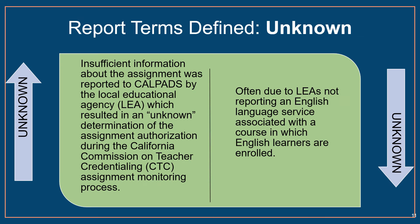An assignment monitoring outcome of UNKNOWN indicates that insufficient information about the assignment was reported to CALPADS by the local educational agency, or LEA, which resulted in an unknown determination of the assignment authorization during the CTC assignment monitoring process. This outcome is often the result of LEAs not reporting an English language service associated with a course in which English learners (ELs) are enrolled. Although the assignment authorization may be clear in other areas, an assignment monitoring outcome of unknown in the EL authorization space results in an overall determination of unknown for the assignment.